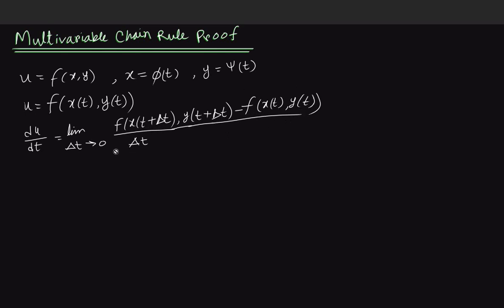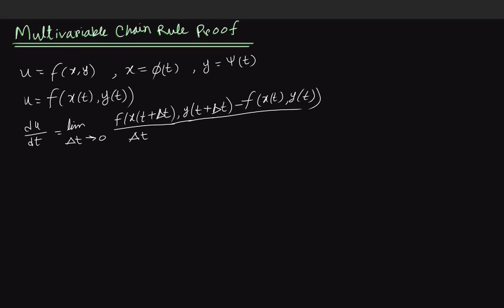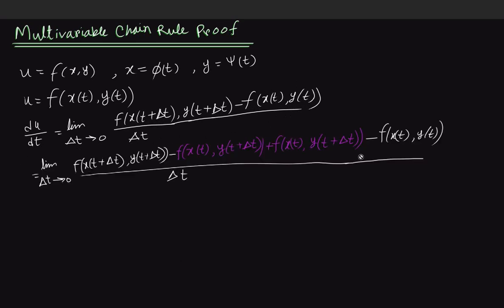When del t approaches zero we get our derivative. So we add and subtract this term here, which is f of x of t, y of t plus del t, minus f of x of t, y of t plus del t. These two terms are basically the same.